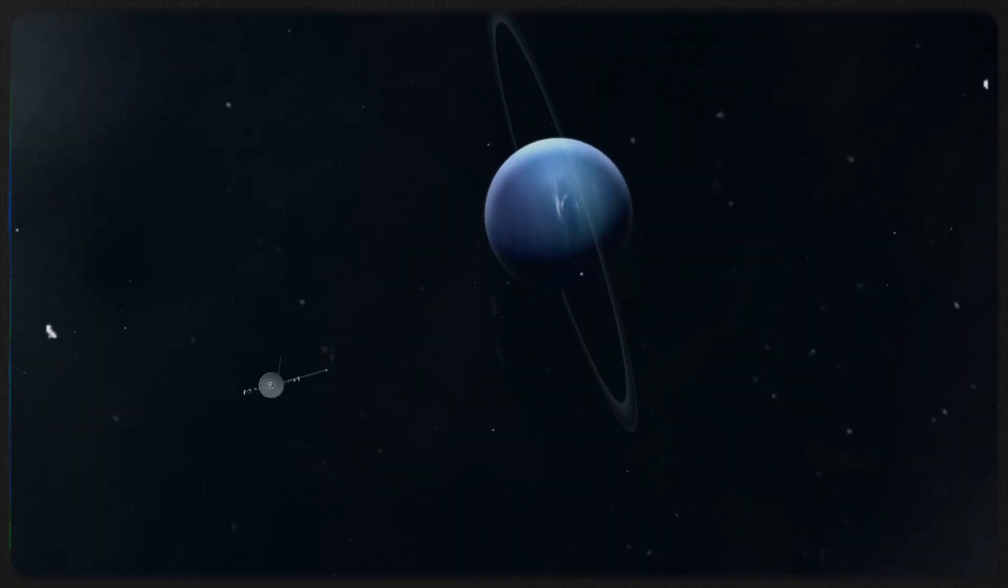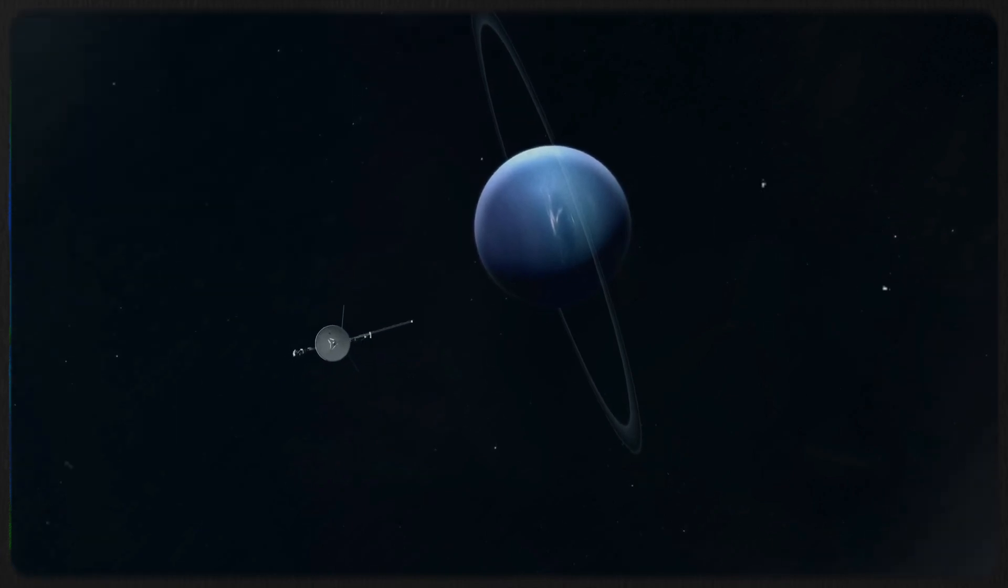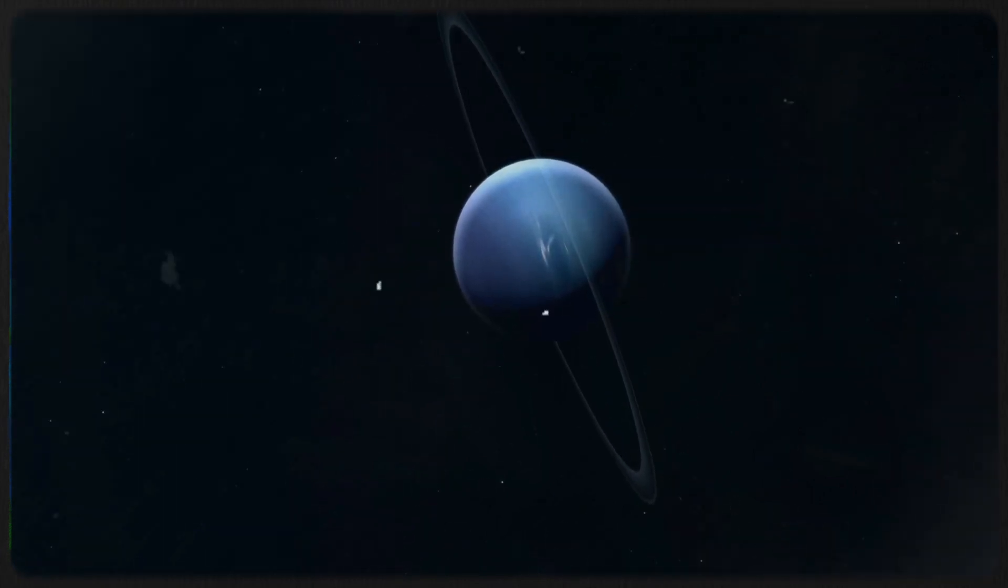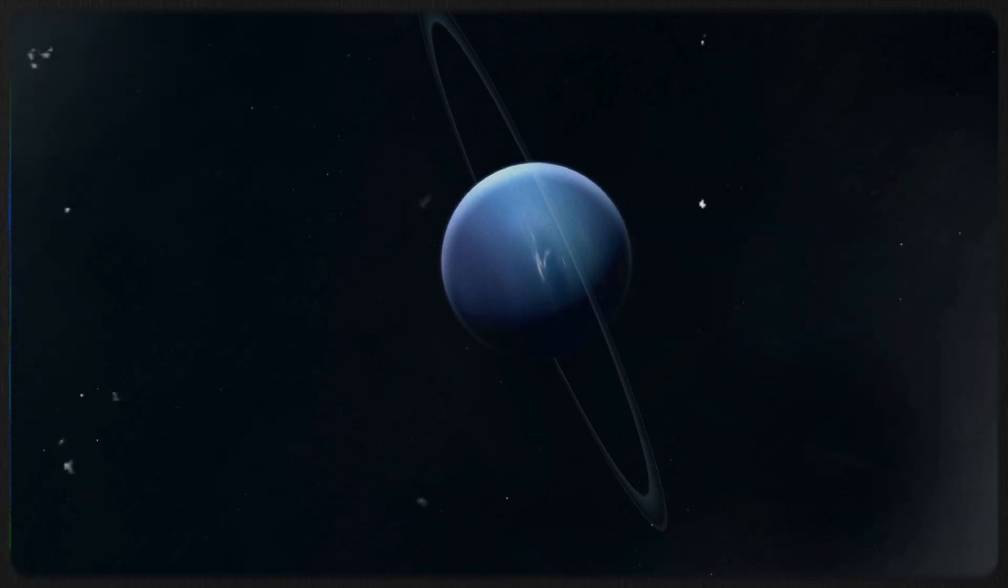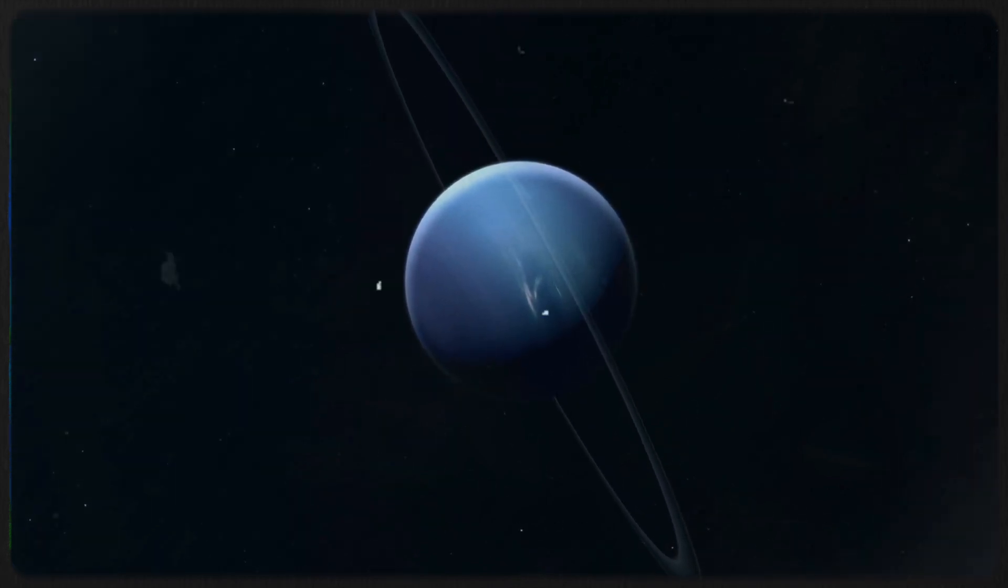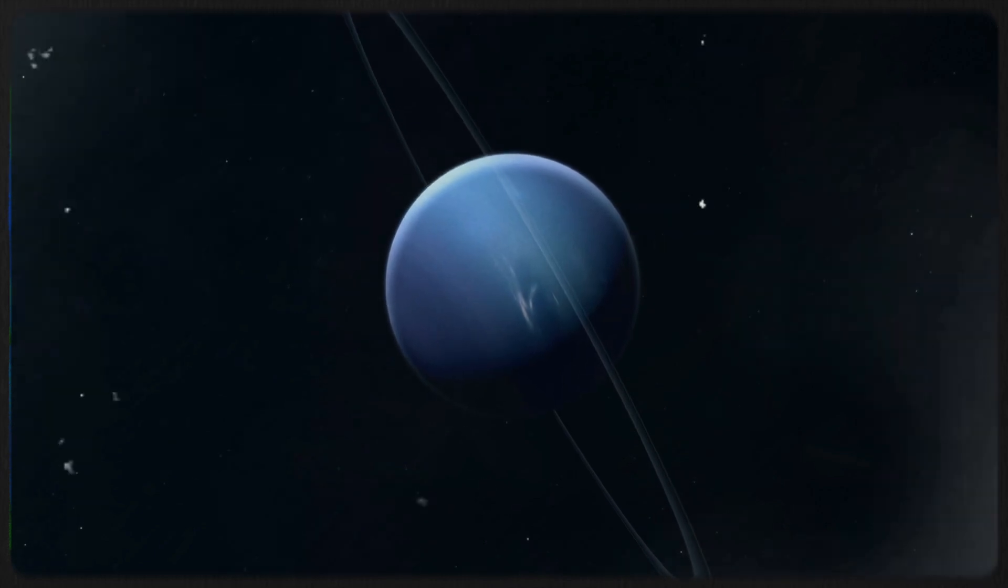Voyager 2, for instance, provided unprecedented data on Neptune, a planet once considered relatively insignificant. The fact that Neptune, located so far from the sun and receiving minimal solar energy, could support diverse weather patterns and climates both amazed and puzzled scientists.